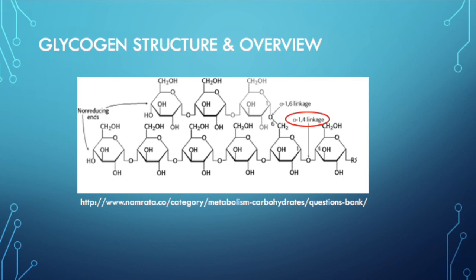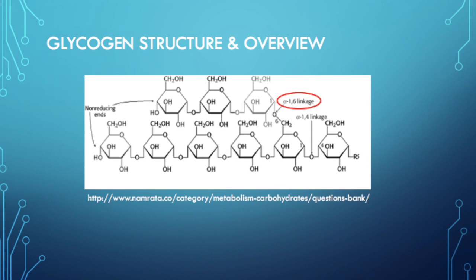The enzyme responsible for the alpha-1,4 linkages is glycogen synthase. Alpha-1,4 linkages produce straight chains as opposed to branching and are the locations at which glycogen is reduced throughout this pathway. An enzyme known as the branching enzyme acts upon the alpha-1,6 linkages to aid in branching within the glycogen chain. This branching occurs approximately every 10 residues but is required to be at least 4 residues apart from the neighboring branch.